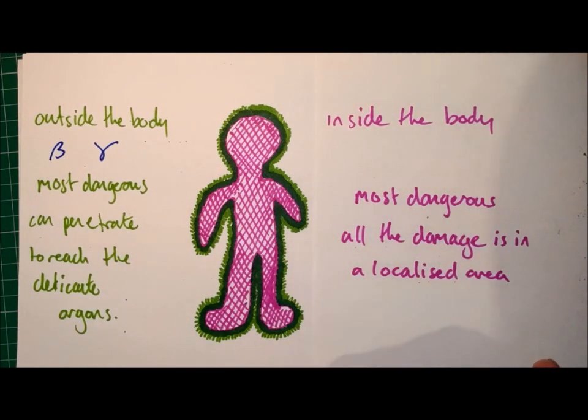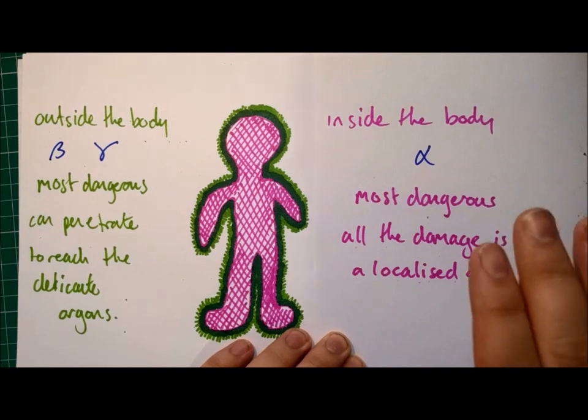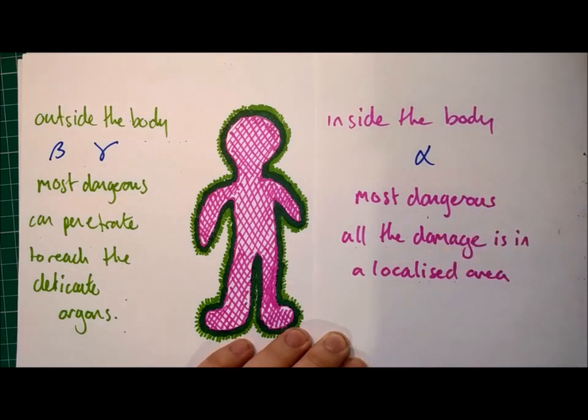On the other hand, inside the body the most dangerous are alpha. Because alpha sources, if they reach inside the body, all of their damage is done to a localised area and what you have inside your body are those delicate organs. So they can be much more dangerous if they contaminate inside your body than outside.